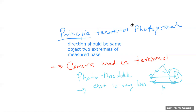The camera used is known as photothoedolite, similar to a traverse theodolite. It is very cheap compared to other photographic instruments and can be carried by an individual surveying firm.